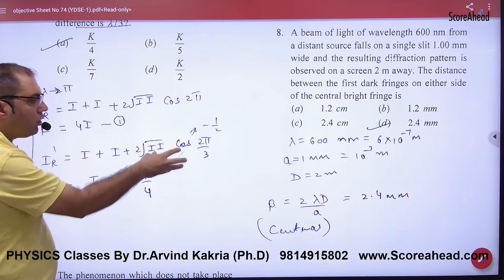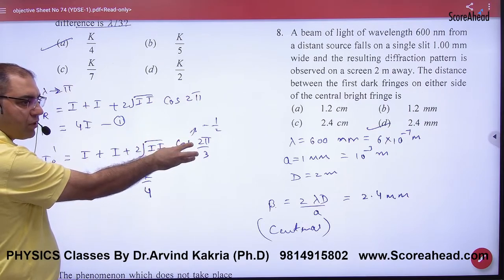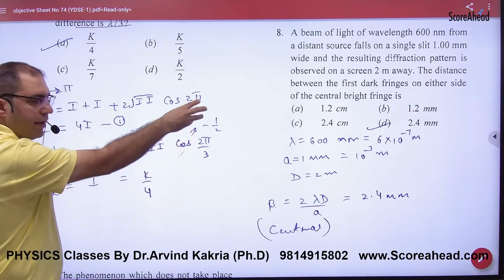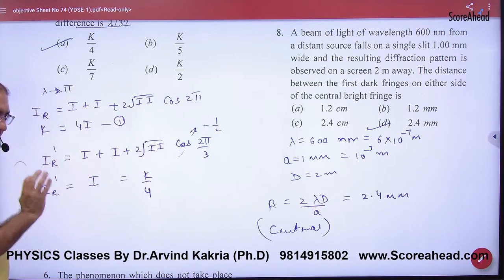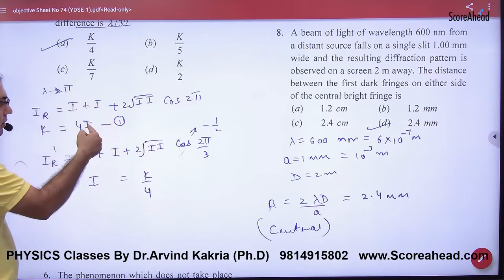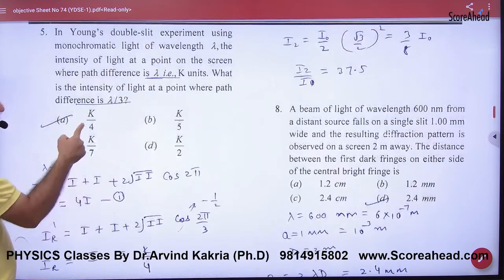Clear? And cos of 2pi by 3, what is 120? Cos of 120, what is minus half. So solve it. What is the answer? I. But i is equal to k by 4. So the answer is k by 4.